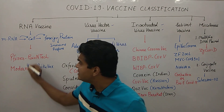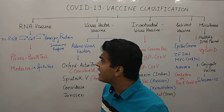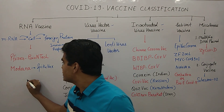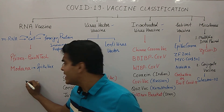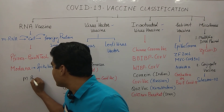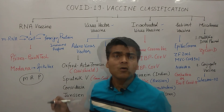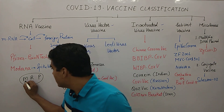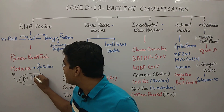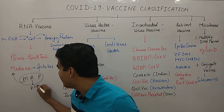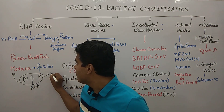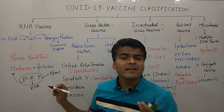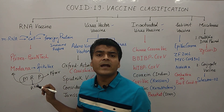Here is a trick to remember the RNA vaccines for COVID-19. The trick is MRP — just like we check the MRP when purchasing any product. M stands for Moderna, R stands for RNA vaccine, and P stands for Pfizer, reminding us of the Pfizer-BioNTech vaccine.